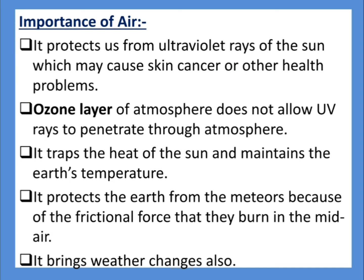Importance of air: This atmosphere actually protects us from ultraviolet rays — that is, the UV rays of the sun — which may cause skin cancer and other health hazards. You may have already heard about the ozone layer. The ozone layer is one part among these layers of atmosphere that prevents UV rays from directly coming to the earth and blocks them from entering the earth. This atmosphere also protects the earth from meteors — some extra things present in space — and prevents them from hitting the earth's surface.